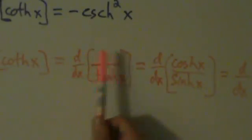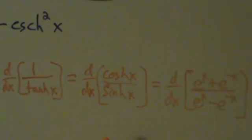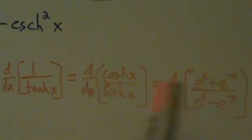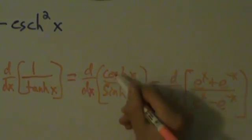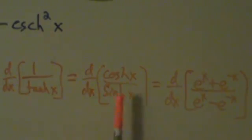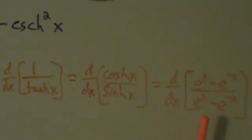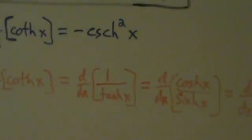Or we could rewrite the first one and do a chain rule. Technically speaking, we could also do product rule and chain rule on either one of these, but that's going to be a little too messy. There are a bunch of different ways to go about doing this, but because we've done a lot with the quotient rule already and this will be a little messier than we'd like, let's go ahead and do something with this here.